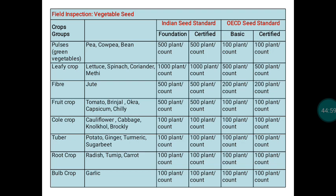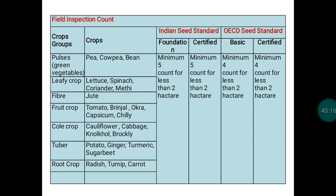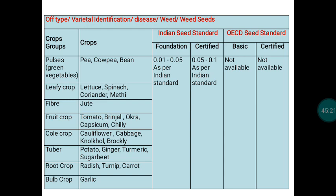Regarding field inspection for vegetable seeds: the number of plants to be observed for each count is specified, with comparisons between IMSCS and OECD standards for both Foundation/Basic and Certified Seed categories. Key differences include: in OECD, minimum limits for weeds and diseases in vegetable seed inspection are generally not specified, whereas IMSCS does specify them.